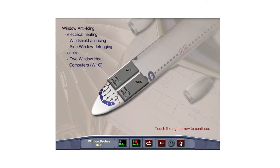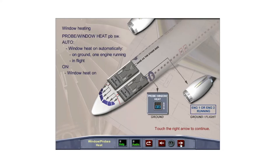The aircraft uses electrical heating for cockpit windshield anti-ice and side window defogging. The two window heat computers, or WHCs, control window anti-icing. The window heat computers automatically monitor the system, protect against overheating, and transmit fault messages to the ECAM. With the probe window heat push-button switch in the AUTO position, window heating comes on automatically when at least one engine is running or when the aircraft is in flight. You may manually turn on window heating by pressing the probe window heat push-button switch to its ON position. Window heat operates at low power on the ground and high power in flight.